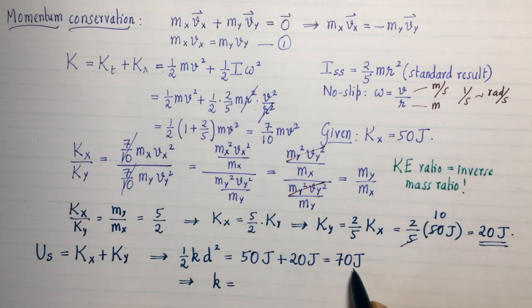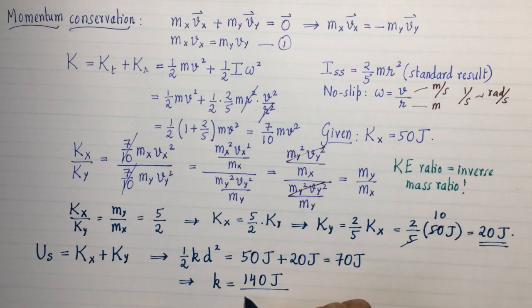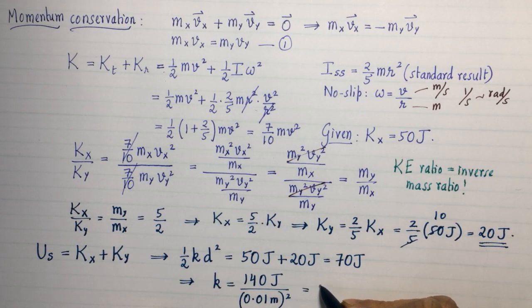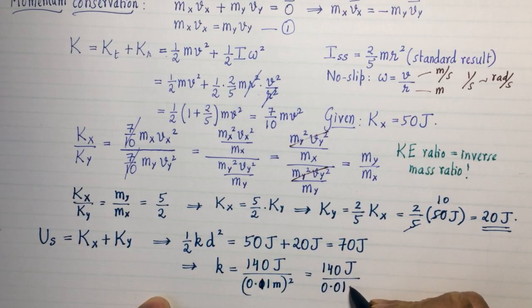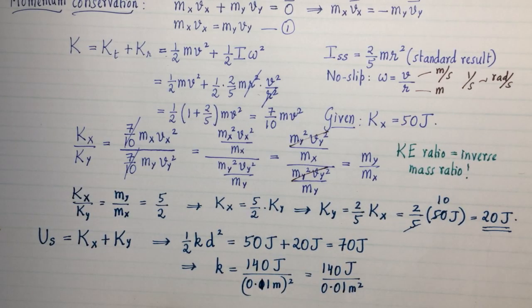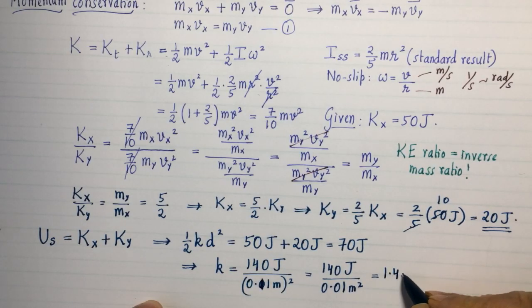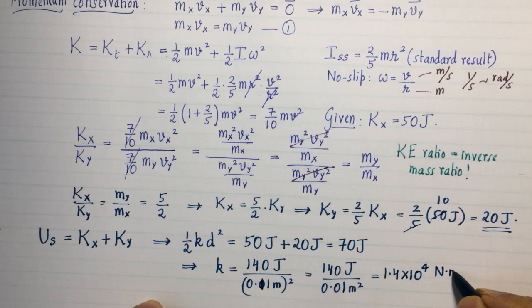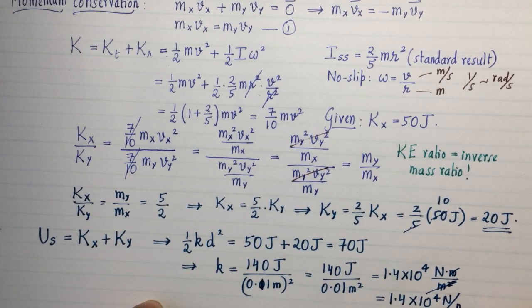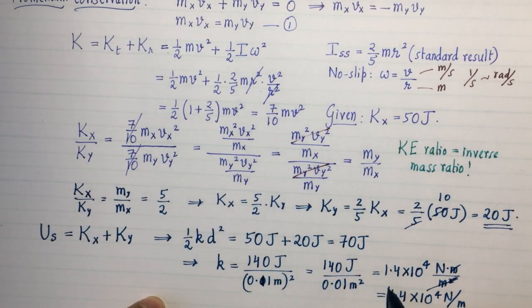We can now solve for the spring constant. The distance d is 10 centimeters. So k = 2(70)/d². That's 140 joules divided by 0.1 meters squared. When I square 0.1, it becomes 0.01 meters squared. That is 1.4 × 10⁴. Joules is newtons times meters, and that's meters squared, so one meter cancels. That's 1.4 × 10⁴ newtons per meter. That's our answer, the spring constant of the spring.